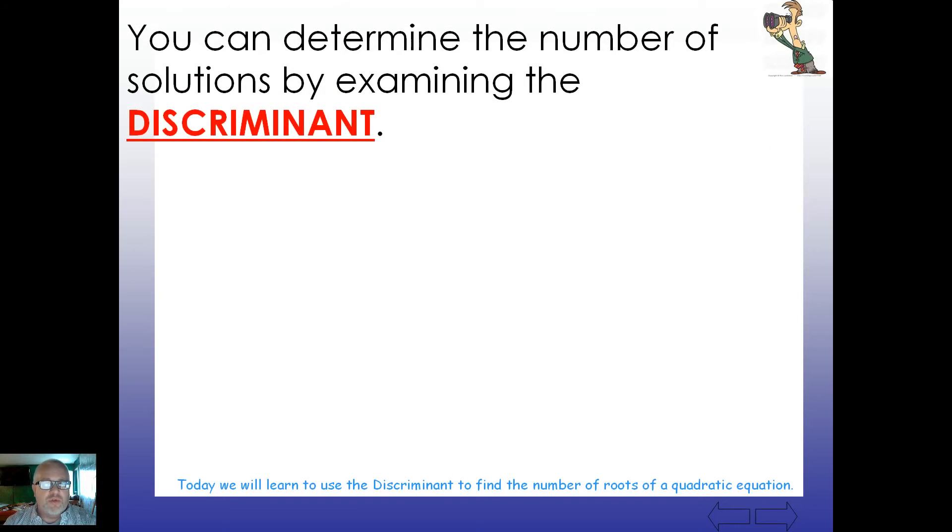So, you can determine the number of solutions by examining what we call the discriminant. Now, what is this thing called the discriminant? Take a look at what's here in red. This right here in red, b squared minus 4ac, that actually is the discriminant. You can kind of ignore everything around it. You can even ignore the square root sign. It's just what's inside. It's whatever b is squared, subtract 4 times a times c. And that will tell you if it's going to touch the graph one time, two times, or in fact, zero times.